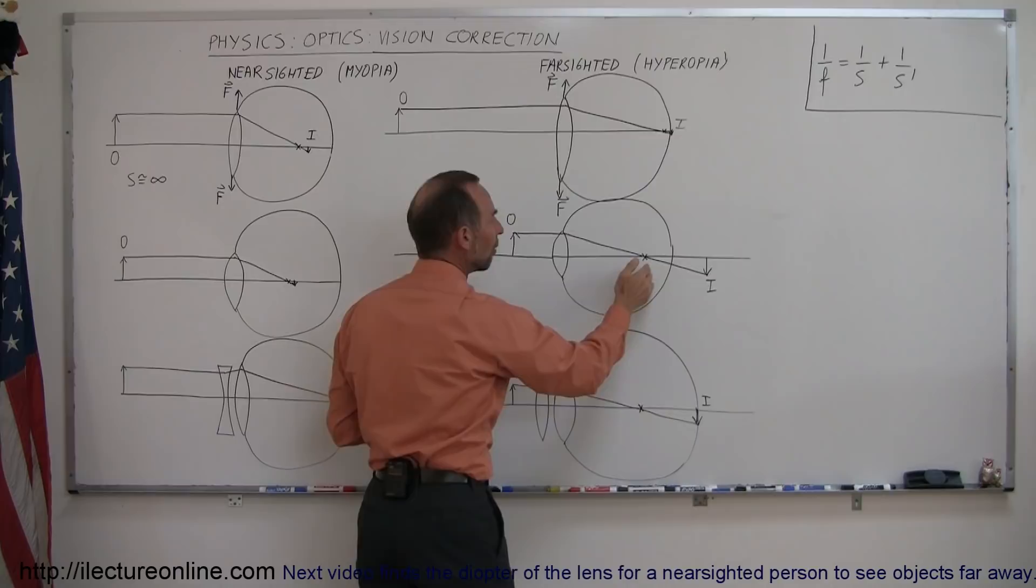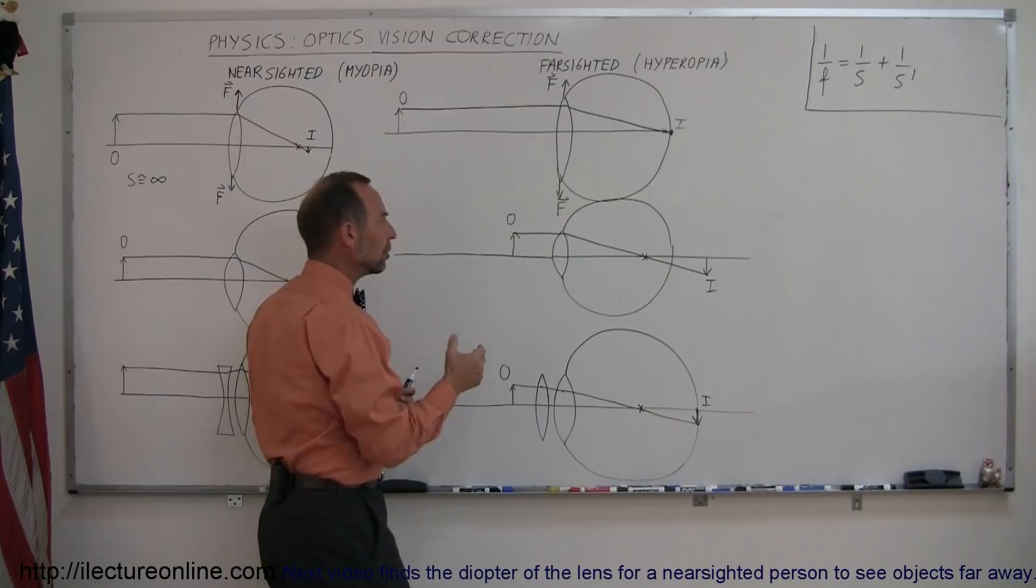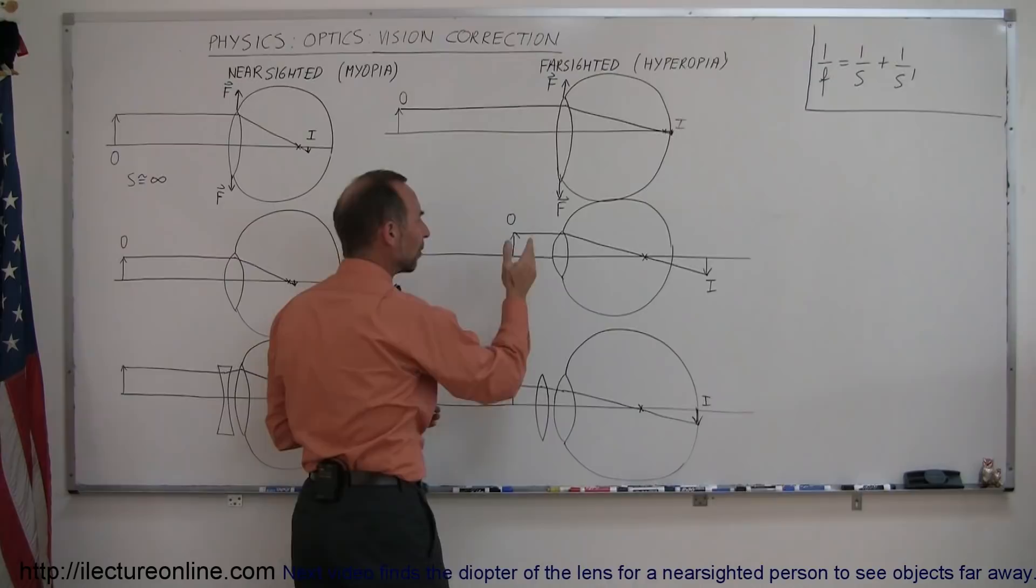falls past the retina and therefore that image will look very fuzzy, it will not look clear or crisp. So the only way to do that, since the muscles when they're relaxed don't allow the lens to bulge up enough, as I should say, then we need some help to make that happen.